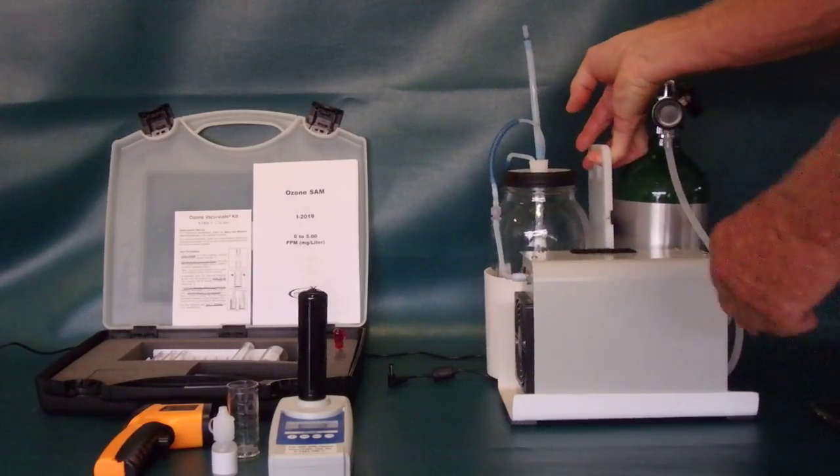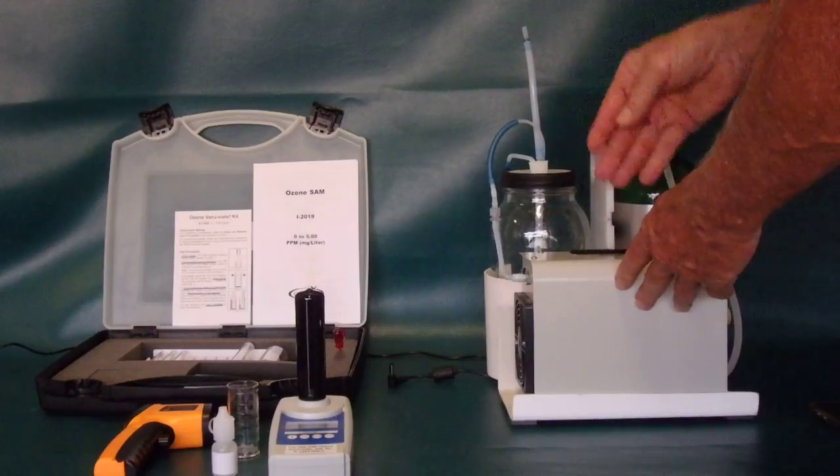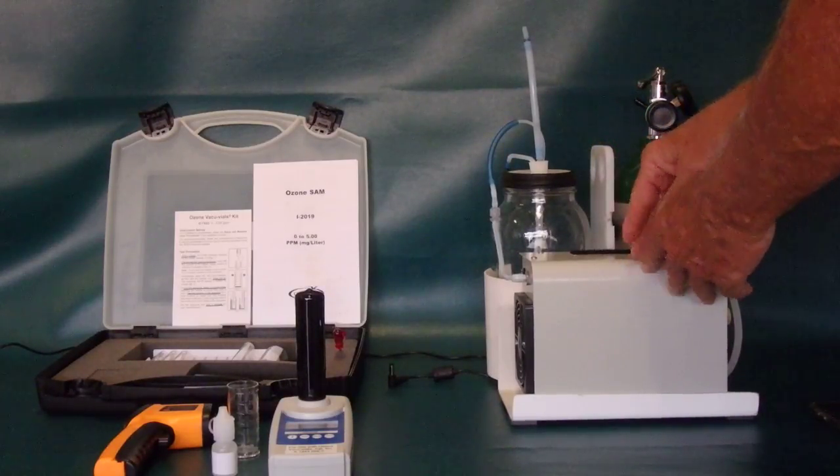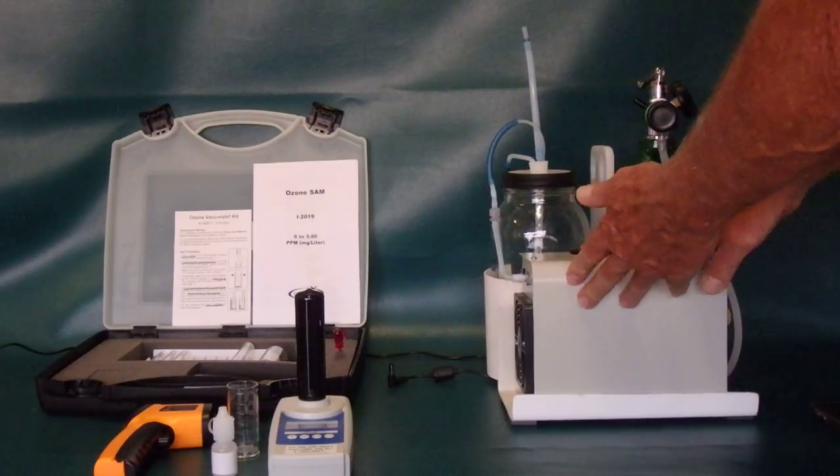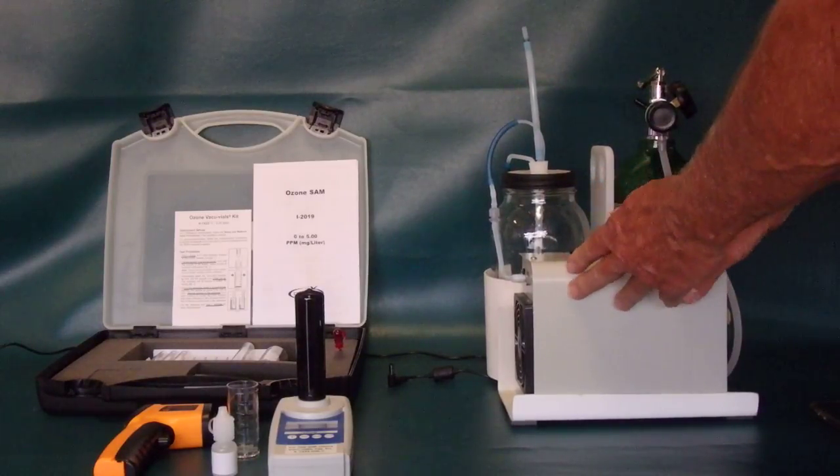We're using an NLE KNT 24. The 1000 works fine as well. Any generator that puts out one gram per hour will work.